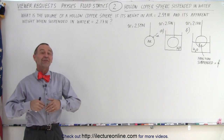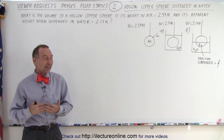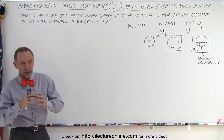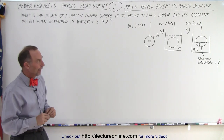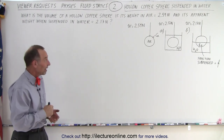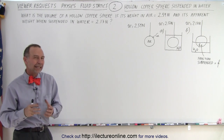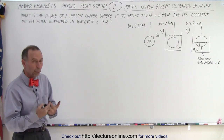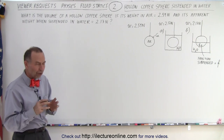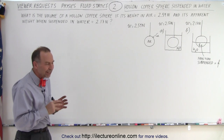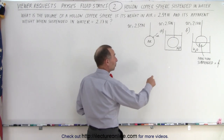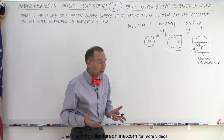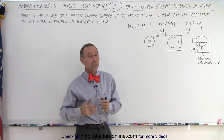Welcome to White Lecter Online. Our next view request on fluid statics deals with submerging a hollow sphere made out of copper, but hollow in the center, in some water. The weight when it's suspended in air is 2.59 newtons, and when it's suspended in water it's 2.17 newtons. They want us to find the volume of that sphere, but it's not clear whether the sphere is completely submerged or only partially submerged, because it would make a difference. So let's work it out both ways.